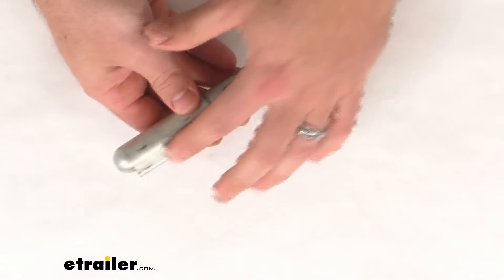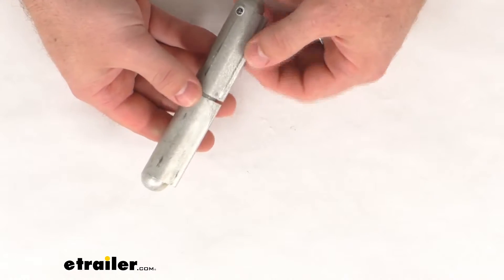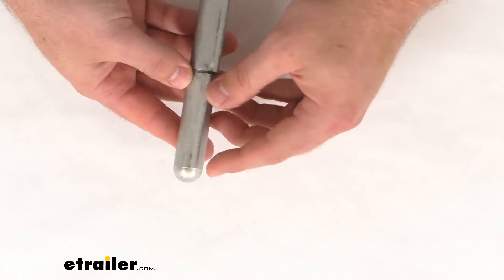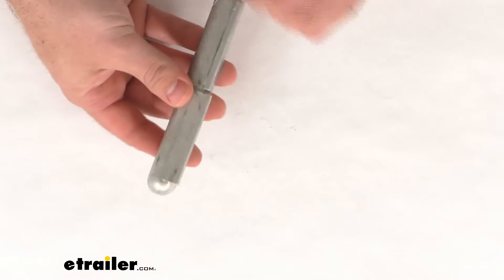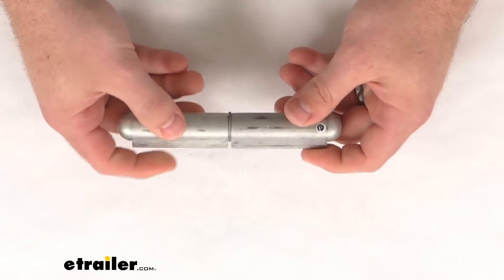Because it is a weld-on installation, you are going to be limited to using this just on metal surfaces. But you are going to have those two flat sides on both ends that will make it very easy for you to get this welded on.